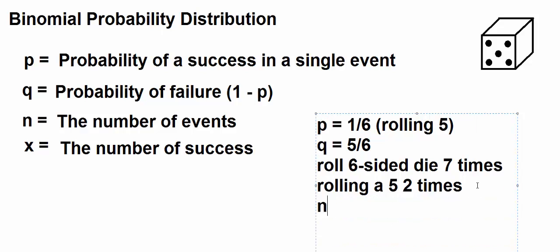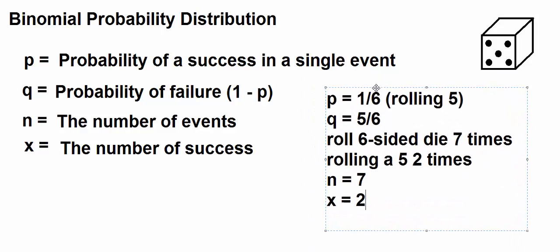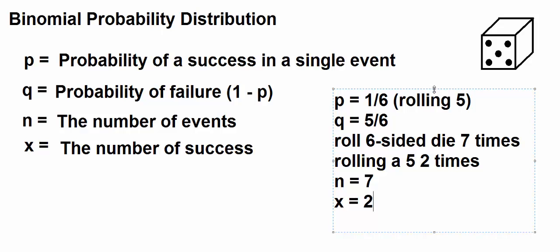And let's say we want to know the likelihood of rolling a five two times. From this, we can deduce that our N, the number of rolls, is seven. And our X, the number of successes, is two. We want to roll a five two times. So, this would be our setup. This is everything that we need for probability distribution.